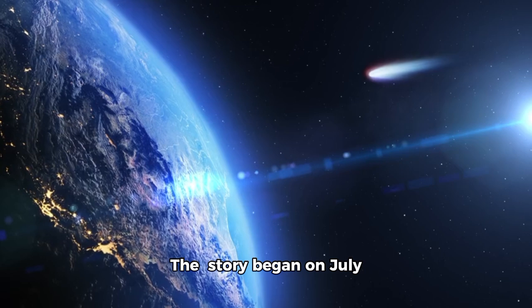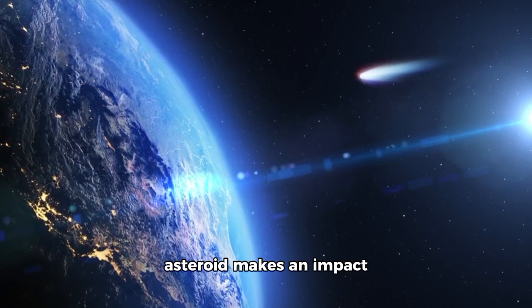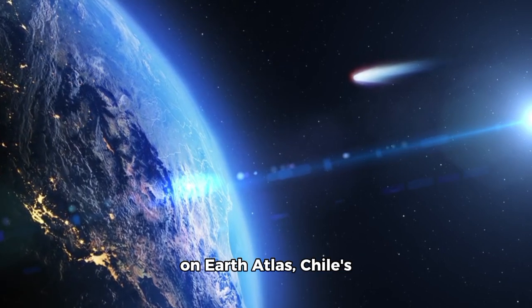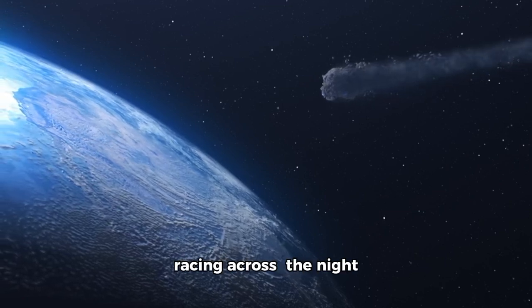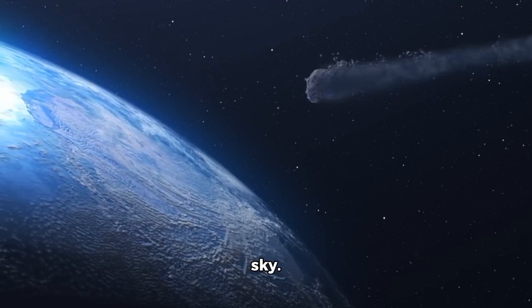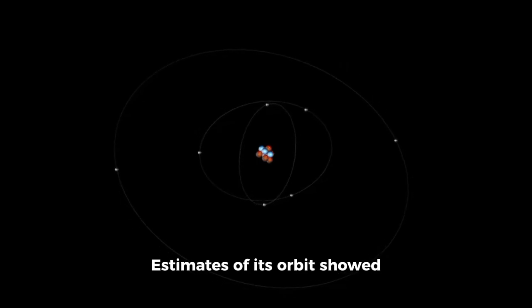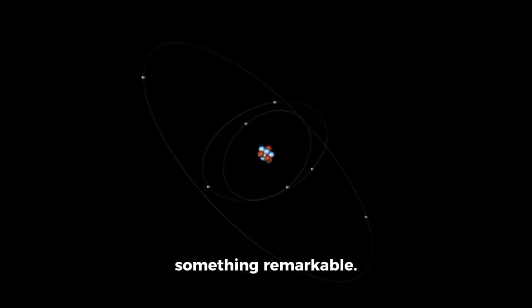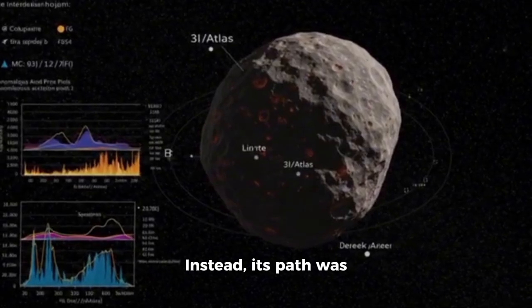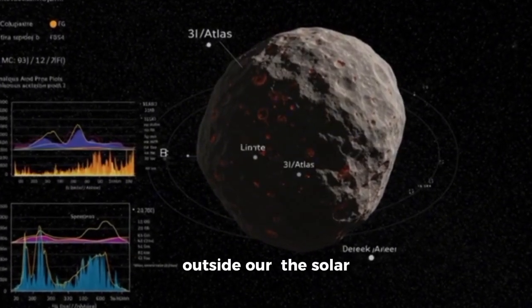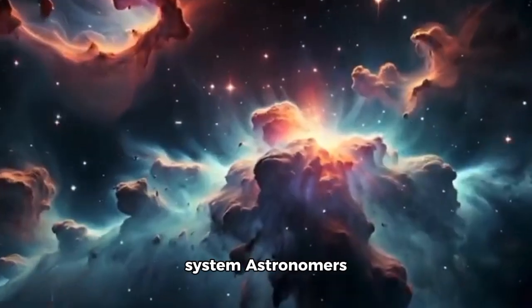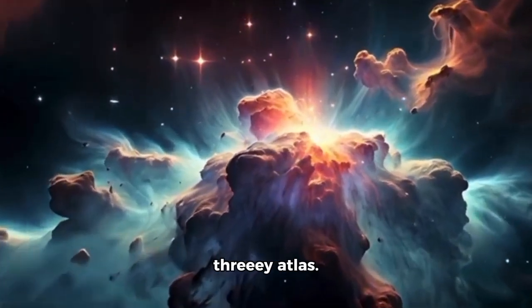The story began on July 1, 2025, when the Asteroid Terrestrial-impact Last Alert System in Chile detected a faint object racing across the night sky. Analysis of its orbit showed something remarkable: it wasn't bound to the sun. Instead, its path was hyperbolic, confirming it had come from outside our solar system. Astronomers swiftly identified it as 3I/Atlas.